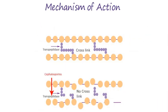Now we are going to discuss the mechanism of action of cephalosporins. A normal bacterium cell wall is composed of peptidoglycan. Cross-linking is necessary in order to maintain the integrity of the cell wall — it provides strength to the bacterium cell wall. There is an enzyme in bacteria known as transpeptidase, which catalyzes the formation of cross-linking between one peptidoglycan layer and another.